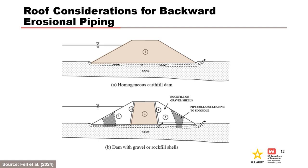In most cases, the core of the embankment is capable of providing a roof to a developing pipe in the foundation, because it is typically constructed of impervious soils or semi-impervious soils with sufficient fines. In the upper figure, a homogeneous embankment provides a roof to a developing pipe in the foundation. However, if there are upstream or downstream zones of non-plastic granular material in the embankment that are not capable of supporting a roof, for example rock fill or gravel shells, then a pipe through the foundation may not be able to fully develop, as shown in the lower figure.